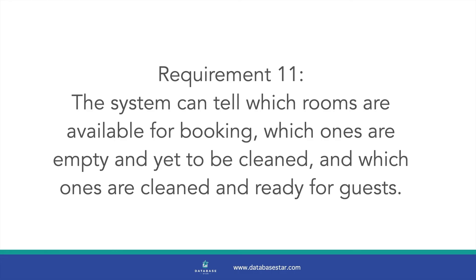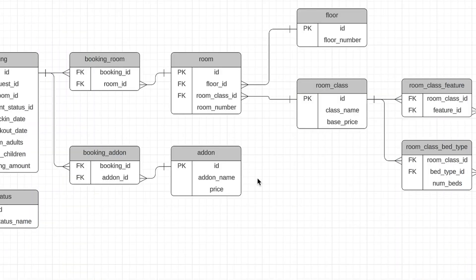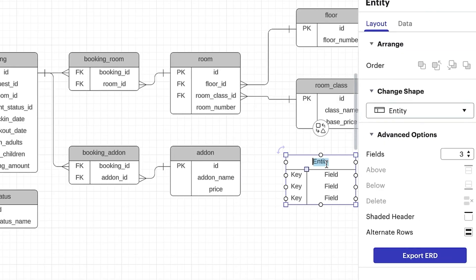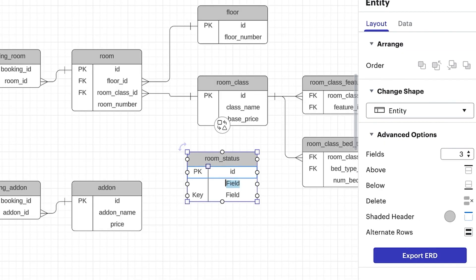Requirement 11 is about telling whether a room is available, along with several different things about a room — it could be occupied, then empty when guests check out, then ready to clean, then currently being cleaned, then cleaned and ready for guests. To capture this kind of lifecycle, we'll add a lookup table called room_status with an ID and a name, and add the foreign key to the room table. Any application using this database can build functionality to move between statuses.